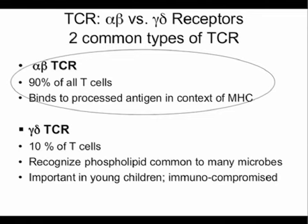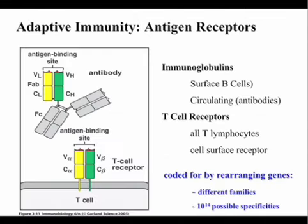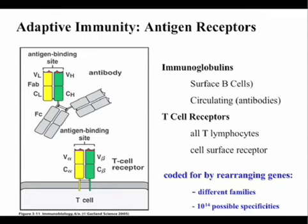The gamma delta T cell is mostly found at mucosal surfaces. The T cell receptor is very similar to the B cell receptor or antibody — there's a constant region, a variable region or antigen binding region, with heavy chain and light chains. The T cell receptor is structurally very similar to the heavy-light chain portion of the Fab of an antibody. Like the B cell receptor, it's coded for by separate sets of rearranging genes.